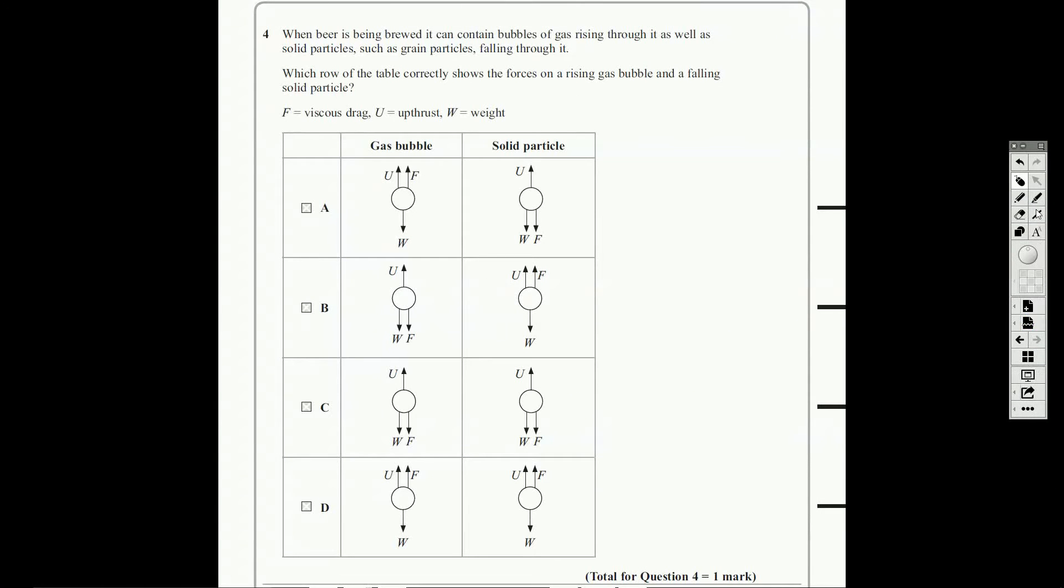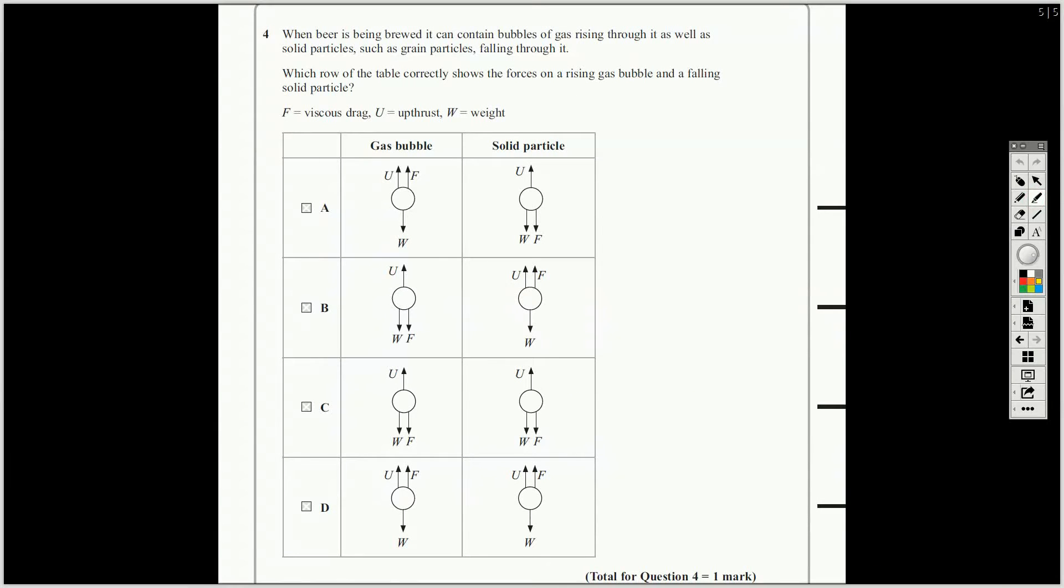So, this is a question all about beer, obviously. Well, no, it's not. It's got nothing to do with beer. It's just a context, isn't it? It's about gas rising and solid particles falling. So, you need to, which row correctly shows the forces rising on a rising gas bubble and a falling solid particle?